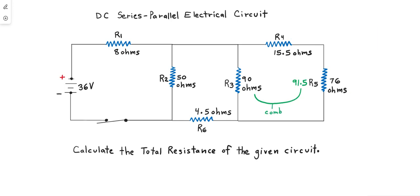Then we combine R5 with R3 and combine these resistors in parallel. We use the inverse sum rule and take the inverse of R3, 1 over 90, plus the inverse of the combined series R4, R5, which is 91.5.